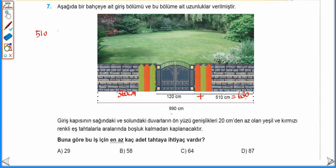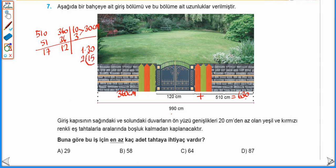510 cm ve 360 cm'lik uzunlukları eş tahtalarla kaplamamızı yani bölmemizi istiyor. Dolayısıyla 510 ve 360'ın 20'den küçük en büyük ortak bölenini buluruz. 510 ve 360'ı 10'a böldüğümüzde 51 ve 36, 3'e böldüğümüzde 17 ve 12. 17 ve 12 ortak bölenleri olmadığı için aralarında asal sayılardır. 10 ve 3'ü çarptığımda en büyük ortak bölenleri 30 cm'dir. Ama biz 20'den küçük olanı arıyoruz. 30'un bölenlerini yazdığımızda 1 çarpı 30, 2 çarpı 15'den 20'den küçük olan en büyük bölenini 15 olarak buluruz. 360 cm'lik uzunluğu 15 cm'lik parçalara böldüğümüzde 24 tane, 510'u 15 cm'lik parçalara böldüğümüzde 34 tane tahta kullanırız. 24 artı 34'ten toplam 58 tane tahta kullanmış oluruz. Yani cevap B.